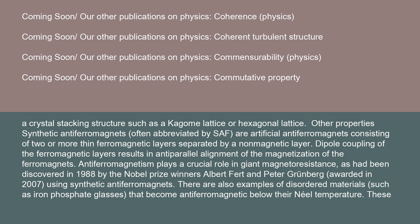Synthetic antiferromagnets, often abbreviated as SAF, are artificial antiferromagnets consisting of two or more thin ferromagnetic layers separated by a non-magnetic layer. Dipole coupling of the ferromagnetic layers results in anti-parallel alignment of the magnetization of the ferromagnets. Antiferromagnetism plays a crucial role in giant magnetoresistance, as discovered in 1988 by Nobel Prize winners Albert Fert and Peter Grünberg, awarded in 2007, using synthetic antiferromagnets.